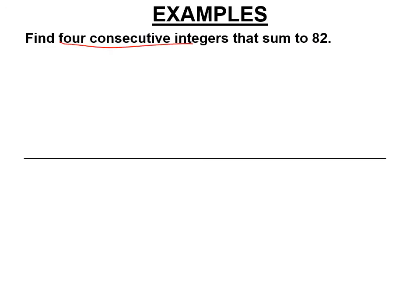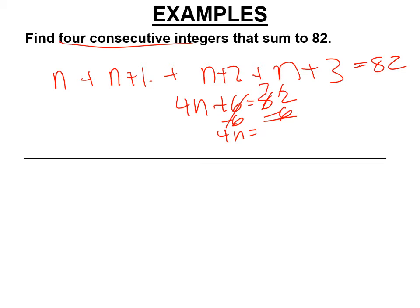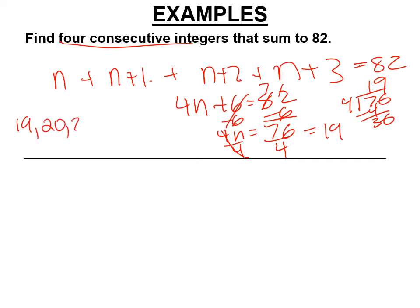Now it says four consecutive integers. We have n, n plus 1, n plus 2, and the next one is n plus 3. We're adding them up and they have to sum to 82. n plus n plus n plus n is 4n, and 1 plus 2 is 3 plus 3 is 6. So our two-step is 4n plus 6 equals 82. Subtract 6 from both sides: 4n equals 76. Divide by 4, and n equals 19. So the four numbers are 19, 20, 21, and 22, and they add up to 82.